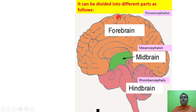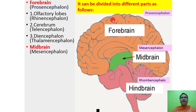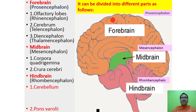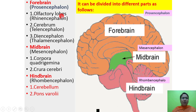The brain is divided into three parts: forebrain, midbrain and hindbrain. Forebrain, also called prosencephalon, consists of: olfactory lobes (rhinencephalon), cerebrum (telencephalon), and diencephalon (thalamencephalon). Midbrain, or mesencephalon, contains the corpora quadrigemina and crura cerebri. Hindbrain, or rhombencephalon, contains the cerebellum and pons varoli.